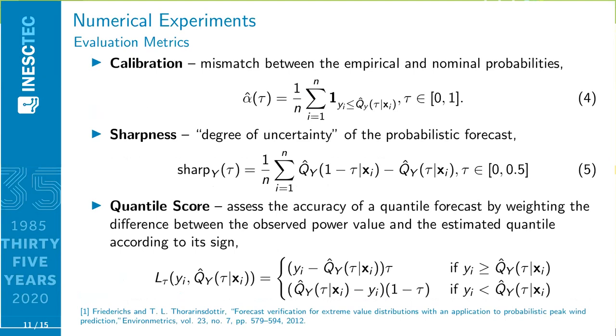The proposal is evaluated through three different metrics. The calibration, which measures the mismatch between empirical and nominal probabilities. For example, 25% quantiles should contain 25% of the observed values lower or equal to its value. The sharpness, which corresponds to the average interval size between two symmetric quantiles, for example, the mean distance between the quantile 10% and 90%. And finally, the quantile score, which assesses the accuracy of a quantile forecast by weighting the difference between the observed power value and the estimated quantile according to its sign.